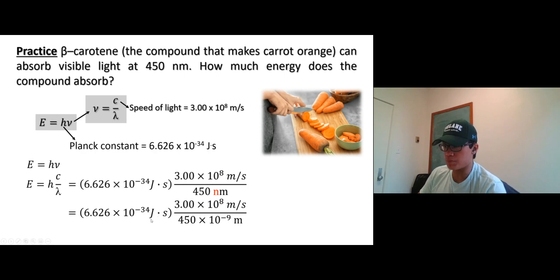Let's take a look at the units. We have meter cancels meter, second times per second cancels out. You'll be left with joules, which is the unit of energy—exactly what we want. Do the calculation on your calculator. You should get 4.41 × 10⁻¹⁹ joules.